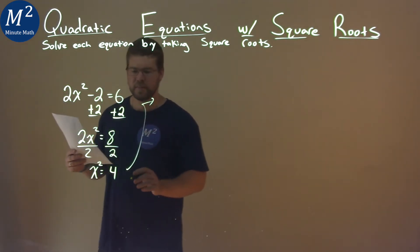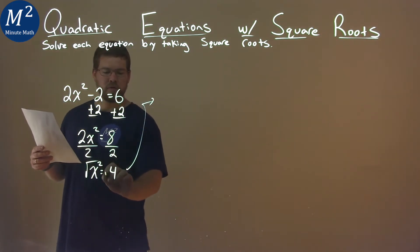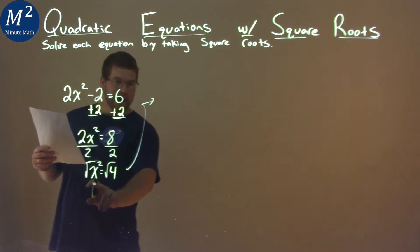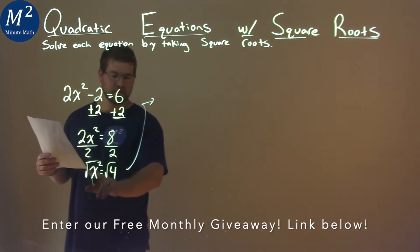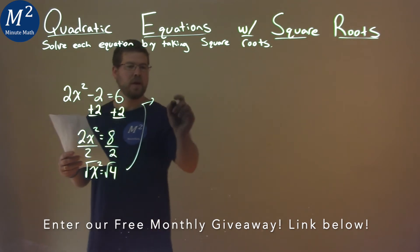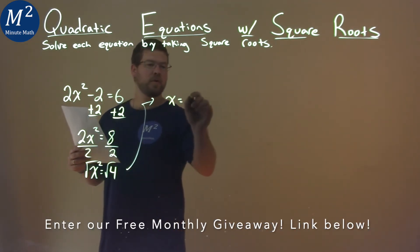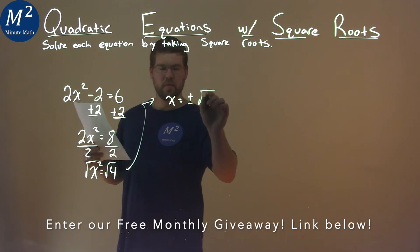So we're going to rewrite this over here. If we take the square root of both sides, it gets rid of the squared value. We have x equals plus or minus the square root of 4.